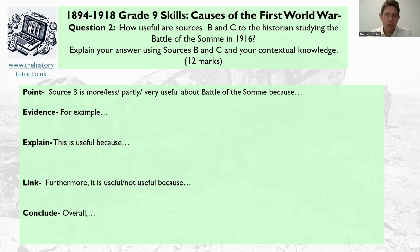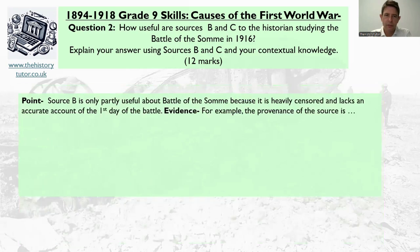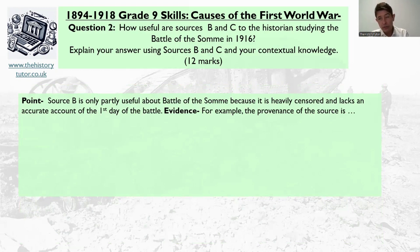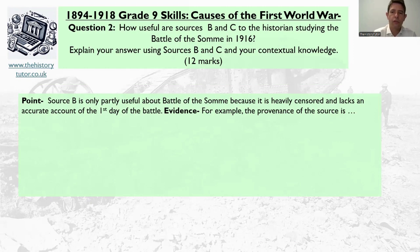You can write along in your revision guides or on paper — pause, give an idea, then look at what I've done and self-assess as you go along. Here's my opening sentence: 'Source B is only partly useful about the Battle of the Somme because it is heavily censored and lacks an accurate account of the first day of the battle.' That opening sentence led me to the provenance rather than the content, because I'm talking about censorship. For example, the provenance of the source is from the Daily Chronicle, the 3rd of July.